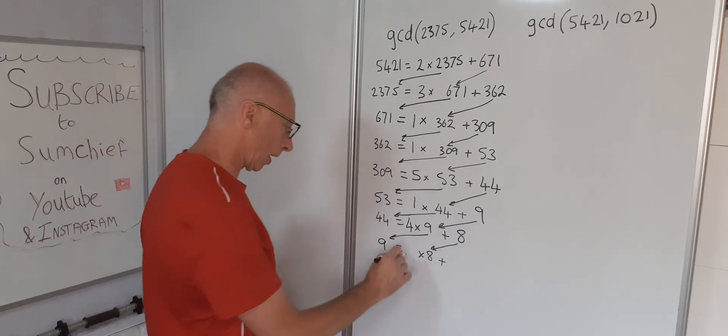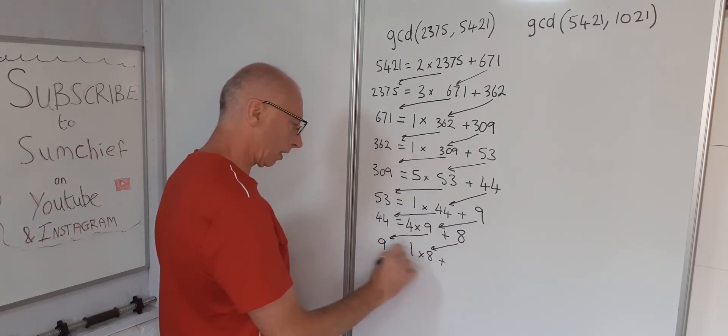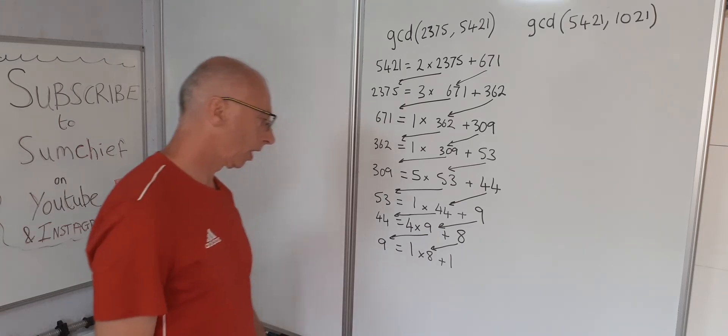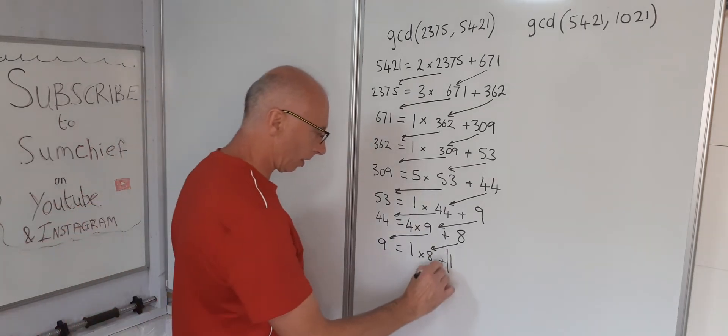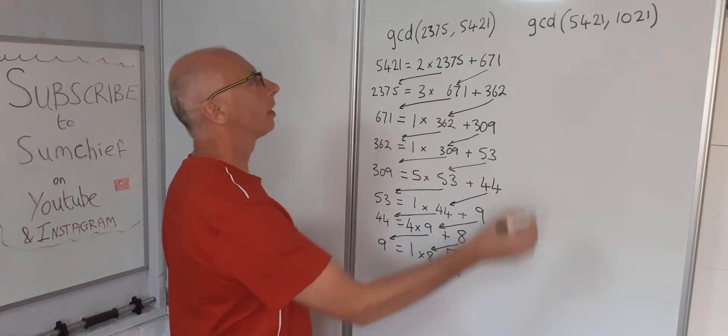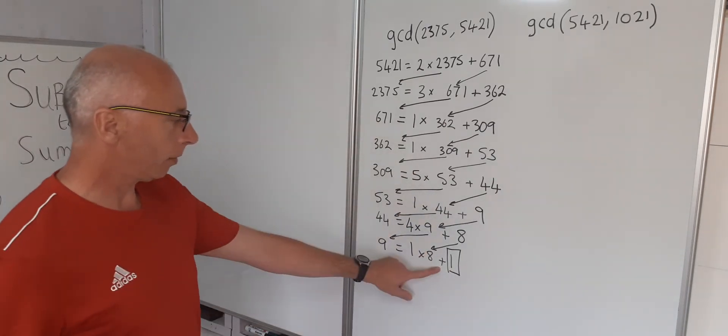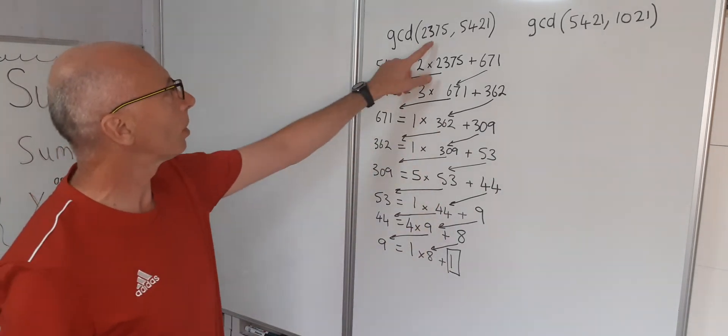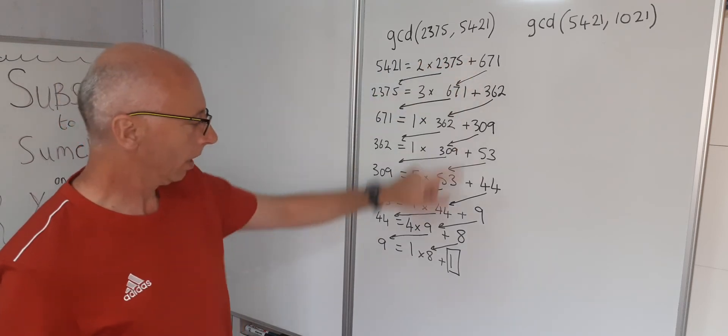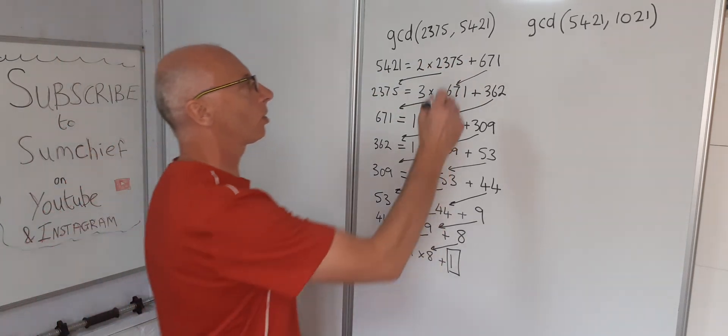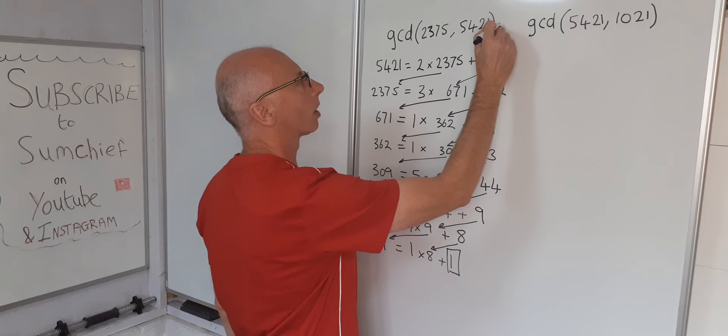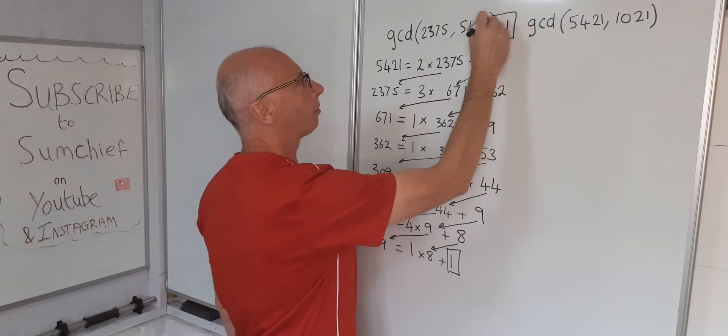Well it's going to be 1s all the way here. 1 times 8 is 8 plus 1. So this is going to be a remainder. Got a 1 at the end here with a remainder. That means these two numbers here are relatively co-prime. So that means the greatest common divisor is just 1. So that's the outcome for that one.